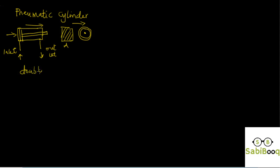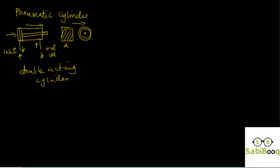This is called a double acting cylinder. A double acting cylinder means it acts in both directions. There is airflow through this direction and out here, and the reverse can also be the case — where air flows into this direction and out through the other direction. In that case the piston will move in a backward direction, so this is a to-and-fro motion. Whenever we need a to-and-fro motion, a pneumatic cylinder does the job, and it is pneumatic because we use air.